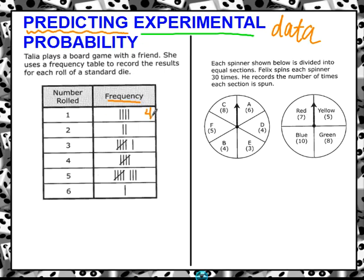They rolled a one four times, a two two times, a three six times, a four five times, a five eight times, and a six one time. So we don't know how many times she actually rolled total, but we could probably find that. Let's see, six and four is going to make 10, two and eight is going to make 10, and five and one is going to make six. So that's 26 things or 26 times total that they rolled this number cube.